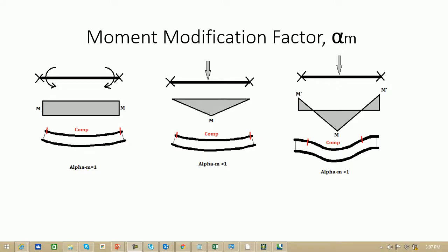Here you can see three different arrangements of the unbraced member with different loading and restraint arrangements, such that all three cases have different bending moment profiles. The left-hand side is the ideal case with a rectangular bending moment profile, which indicates that at every location along the entire unbraced length the compression flange experiences the same magnitude of compressive stress — meaning the compression flange is fully utilized to its maximum possible bending moment carrying capacity.